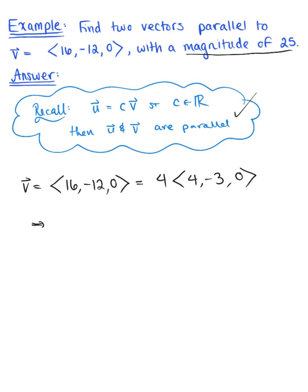So what this is telling us, based off of our definition, is that the vector 16, negative 12, 0, and the smaller vector 4, minus 3, 0, are parallel, because they are scalar multiples of each other.